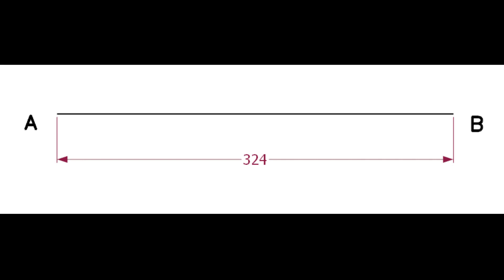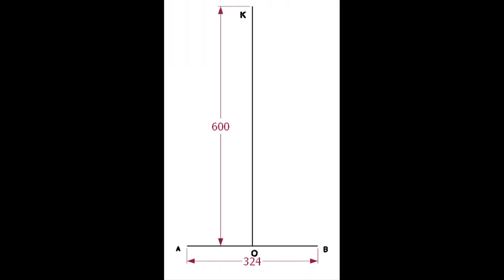Draw a line AB of length 324 millimeters, that is the OD of the pipe. Draw the line OK. The length of the line is not important, but must be more than the pipe diameter.